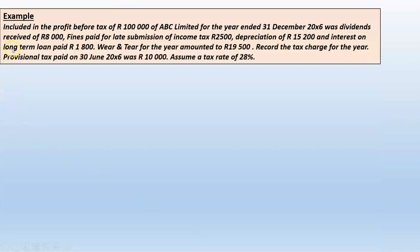Let's do an example. ABC Limited has an accounting profit before tax of 100,000 rand for the year ended 31 December. Included in that profit are: dividends received of 8,000 rand; fines paid for late submission of income tax returns of 2,500 rand; depreciation of 15,200 rand; and interest on a long-term loan of 1,800 rand — which is a tax-deductible expense. The wear and tear allowance for the year was 19,500 rand. Provisional tax was paid on 30 June of 10,000 rand. Assume a tax rate of 28 percent.